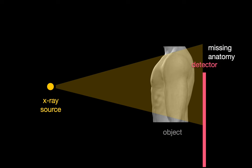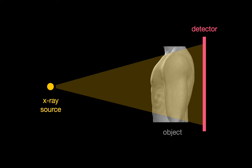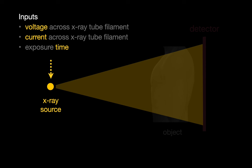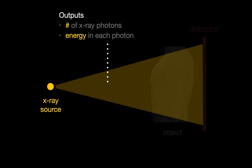If the x-ray beam is not angled but shifted too high or too low, then a portion of the patient's anatomy may be excluded from the chest x-ray. Obviously, the same thing applies if the film or x-ray detector panel is shifted too high or too low too. Besides position, we can control the voltage and current across the x-ray tube's filament in addition to the exposure time of our image. These variables allow us to manipulate the total number of x-ray photons we fire at the patient's chest and the amount of energy each individual x-ray photon packs.